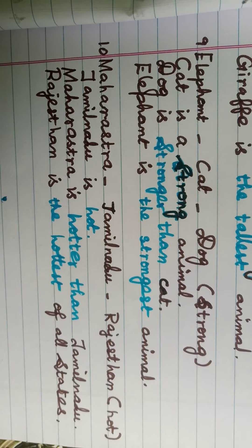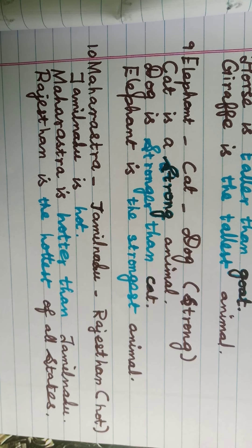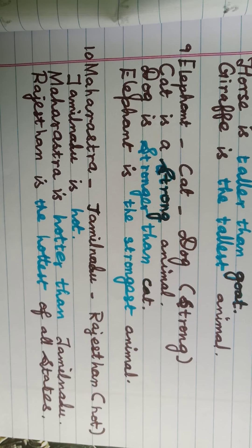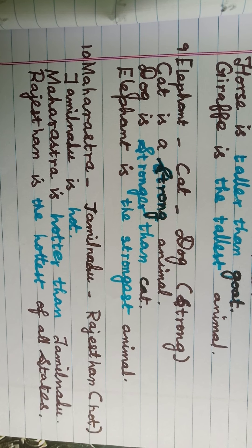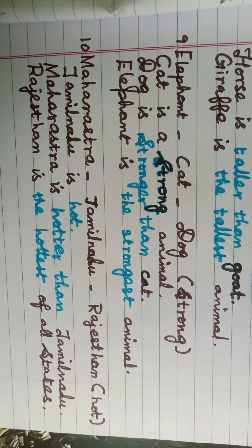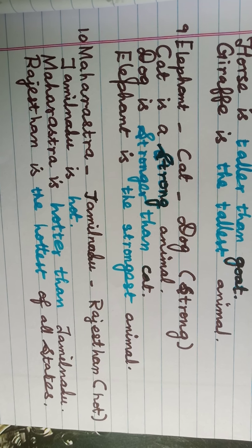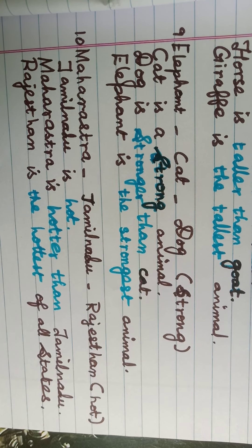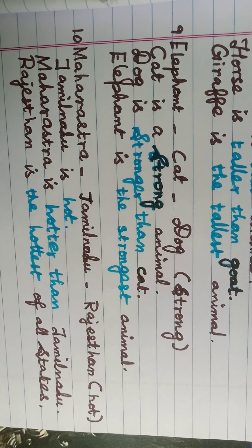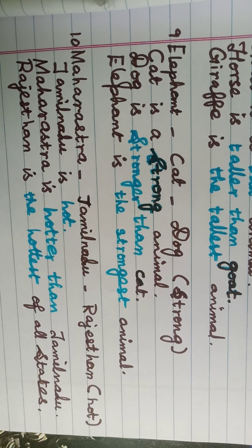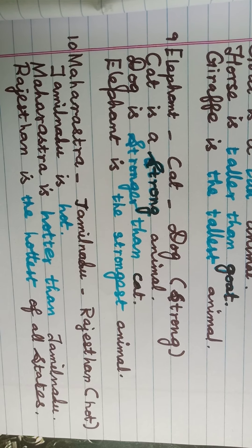Last one: Maharashtra, Tamil Nadu, Rajasthan. The bracket word is 'hard.' Tamil Nadu is hard — no comparison in this sentence, so positive degree. Maharashtra is harder than Tamil Nadu — comparative degree, as Maharashtra is compared to Tamil Nadu. Rajasthan is the hardest of all states — superlative degree. Thank you.